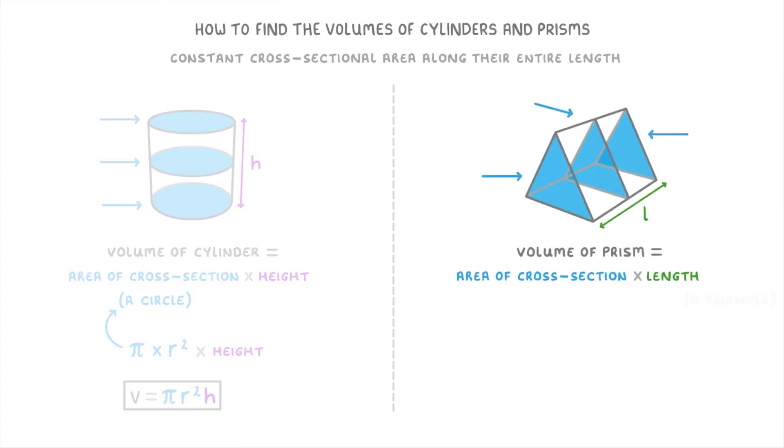Meanwhile, for the triangular prism, which has a triangle as its cross-section, we'd do 1 half times base times height, because that's how we find the area of a triangle, times the length. And we can shorten that one to volume equals 1 half b h l.